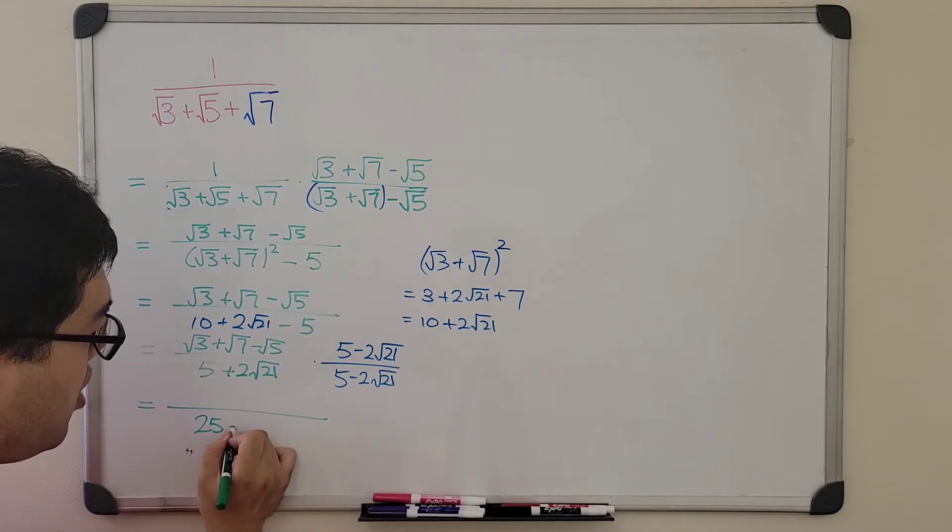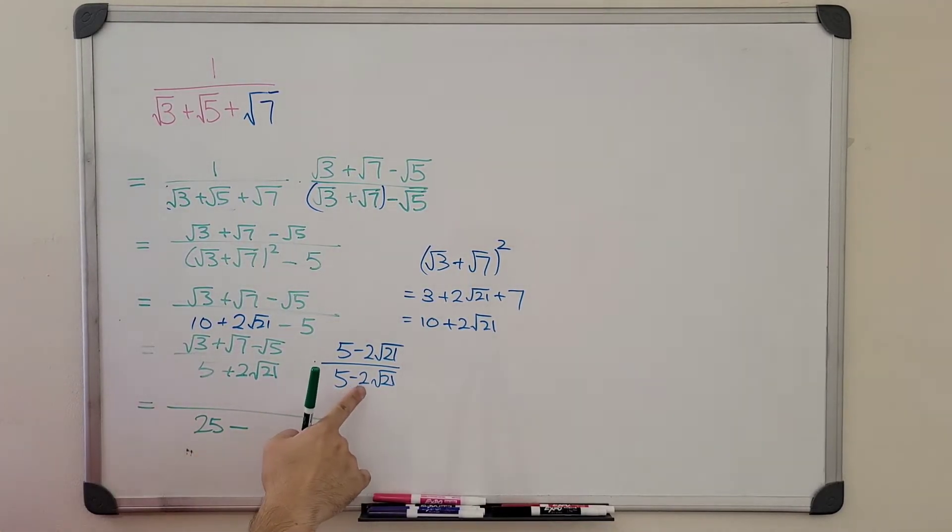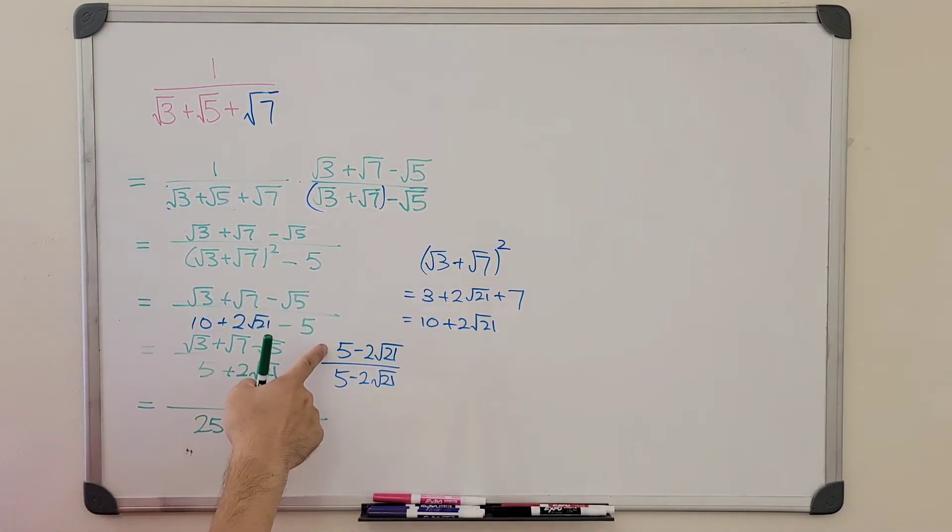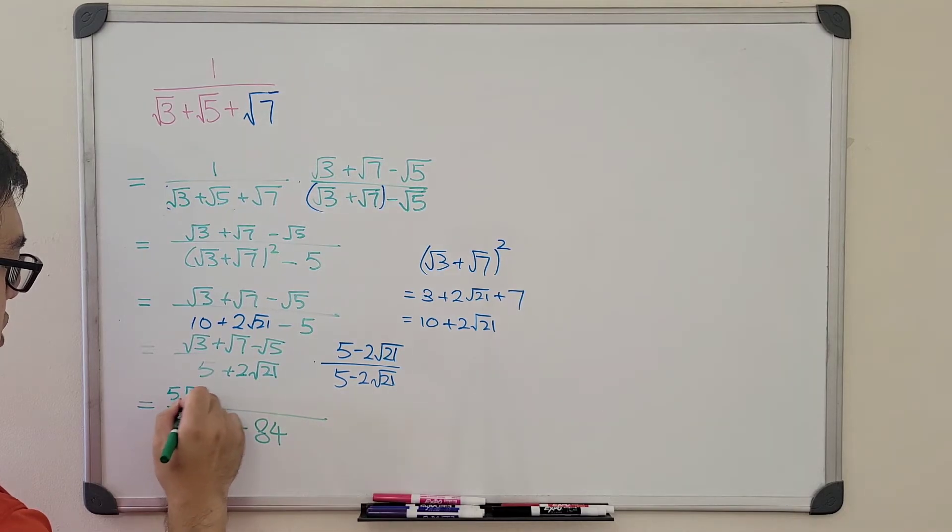So what do we get? We get 5 squared, which is 25, minus 2 times 2 is 4 times 21 is 84. And then we need to multiply this to here everything. So we will get the long expression up here.